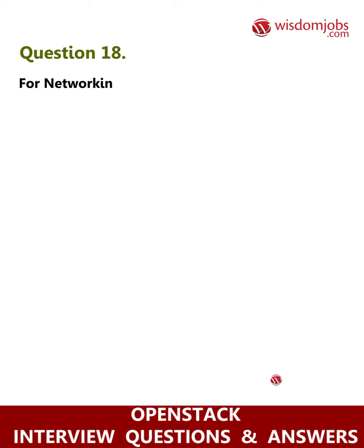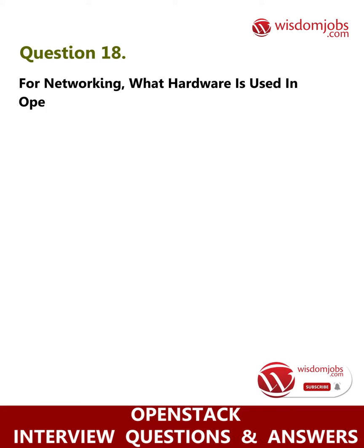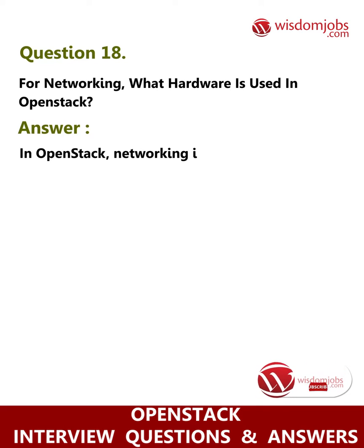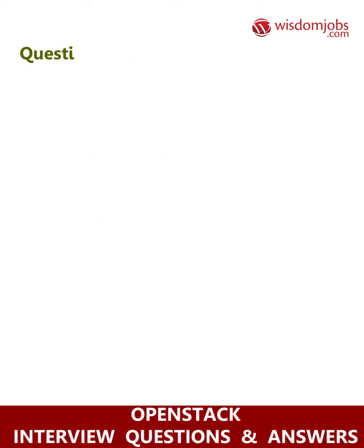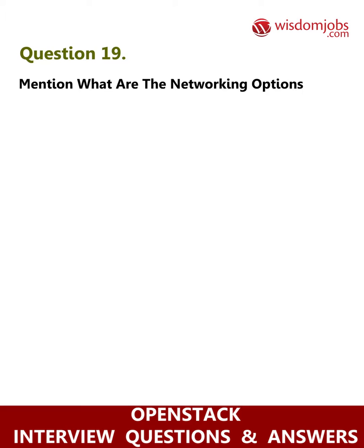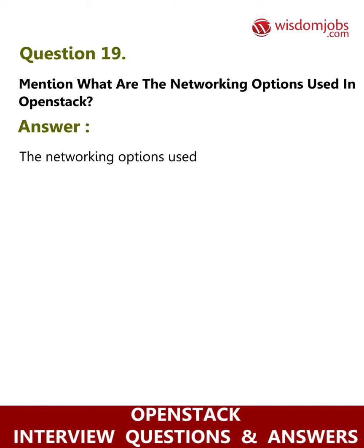Question 18: For networking, what hardware is used in OpenStack? Answer: In OpenStack, networking is done in the following ways: ports, vendor plugins, networks, routers, and subnets.